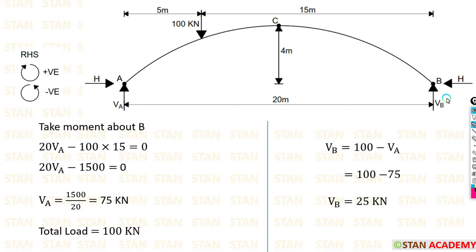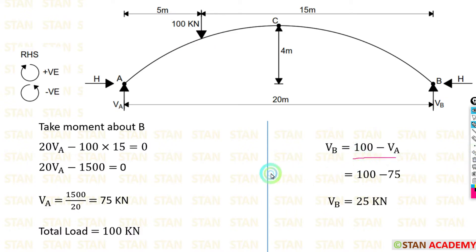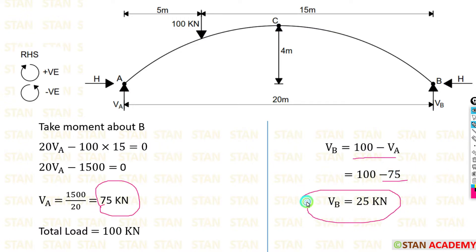For calculating the vertical reaction at point B, I am going to use the total load. In this arch we are having only one point load, that is 100 kN. So total load is 100 kN. VB is equal to the total load minus VA. We have already got VA, so we can apply that here. Finally we are getting VB equal to 25 kN.